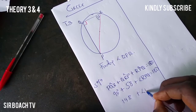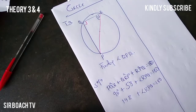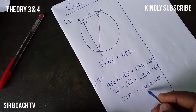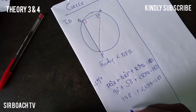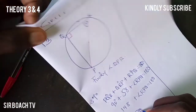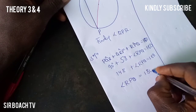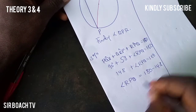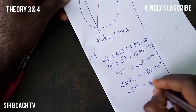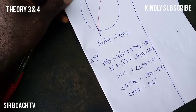So 148 plus angle RPQ equals 180. Making angle RPQ the subject, we get angle RPQ equals 180 minus 148, so angle RPQ equals 32 degrees. Just like that.